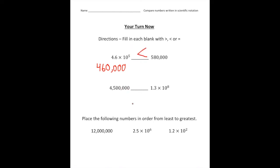For the second one we have 4,500,000 and then 1.3 times 10 to the 8th power. I'm going to write 4,500,000 in scientific notation. Moving the decimal over 1, 2, 3, 4, 5, and 6 spots gives us 4.5 times 10 to the 6th power. So 1.3 times 10 to the 8th is going to be greater than 4.5 times 10 to the 6th, so the inequality goes this way.